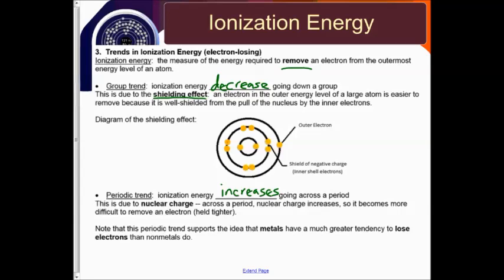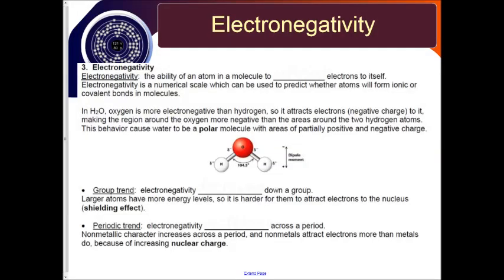Note that this periodic trend supports the idea that metals have a much greater tendency to lose electrons than non-metals do. Our next periodic trend is electronegativity.